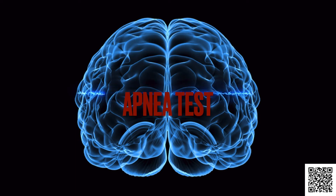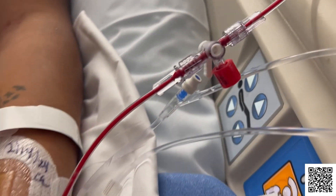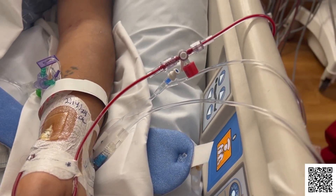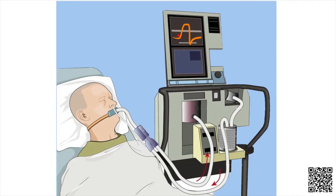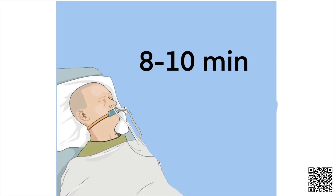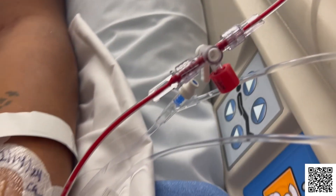Apnea test: this is a test for lack of responsiveness to a carbon dioxide challenge. An initial baseline arterial blood gas, where carbon dioxide and oxygen levels are measured using blood from an artery via an arterial line or needle stick. The patient is then temporarily disconnected from the ventilator and a small tube is inserted into the endotracheal tube to supply the patient with oxygen. The chest and abdominal wall are observed for movement suggestive of respiratory effort, and the monitor is observed for evidence of hypotension or hypoxia.